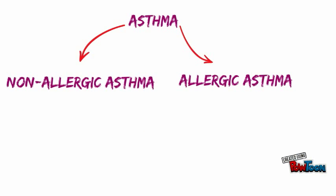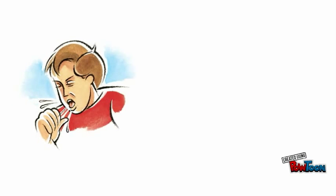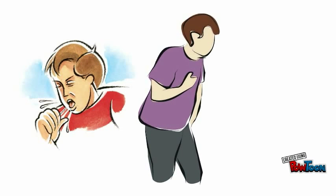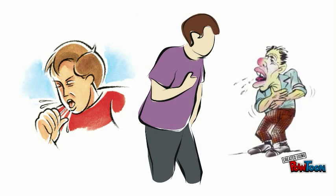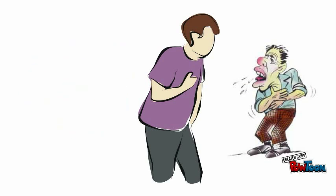Both types of asthma have similar symptoms which can include coughing, wheezing, shortness of breath, rapid breathing, chest tightness, and tightening of the airways.